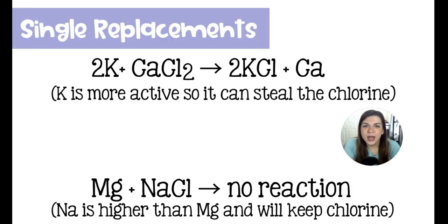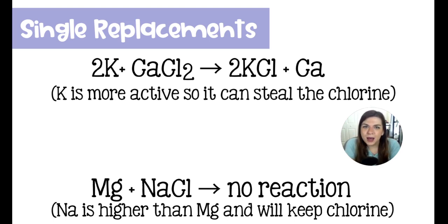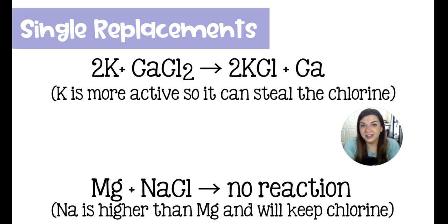Here we have two sample reactions. First, potassium is trying to replace calcium in calcium chloride. Potassium is higher up on the list than calcium, so it is able to kick the calcium out of that chloride compound and take its place. In the second reaction, magnesium is trying to take the place of sodium in a chloride compound, but magnesium is lower in the activity series than sodium, so it's not strong enough to displace sodium. That reaction simply cannot happen as written.